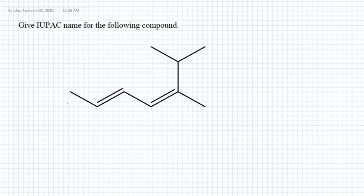If we start numbering from this end, number one, number two, number three, four, five, we have to go this way to find the longest chain and seven. So this is a seven carbon long chain and it's going to be heptane based when we are naming.